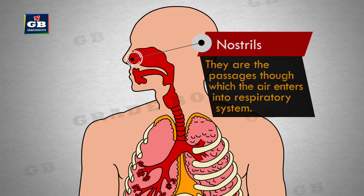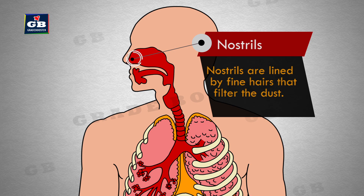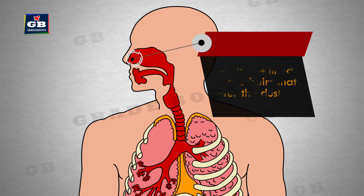Nostrils: they are the passages through which the air enters into the respiratory system. Nostrils are lined by fine hairs that filter the dust.